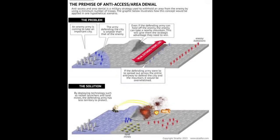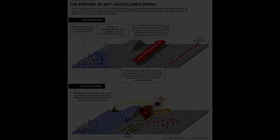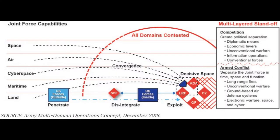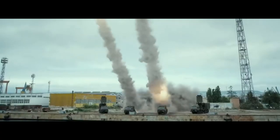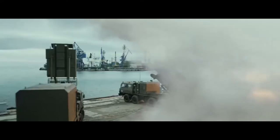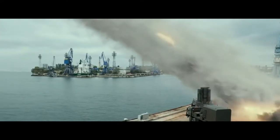Anti-access and area denial, commonly known as A2AD, is a term that is generally used by Western planners to describe a strategy of employing a series of interrelated missile, sensor, guidance, and other technologies designed to deny freedom of movement. The purpose of A2AD is to keep any potential adversaries from operating military forces near, into, or within a desired location.